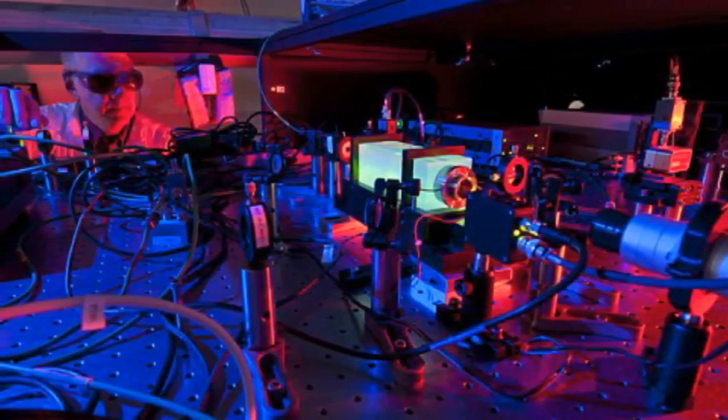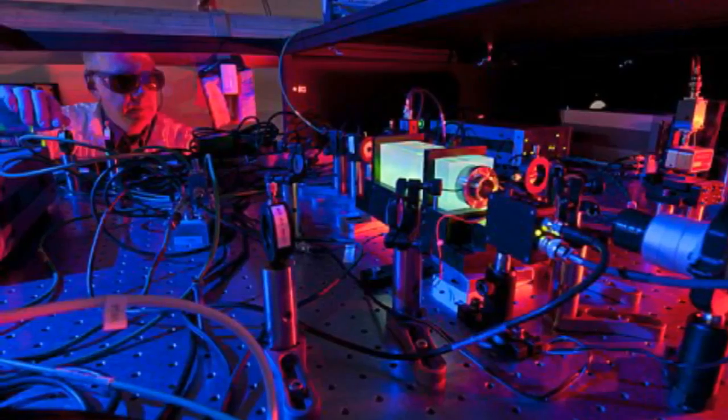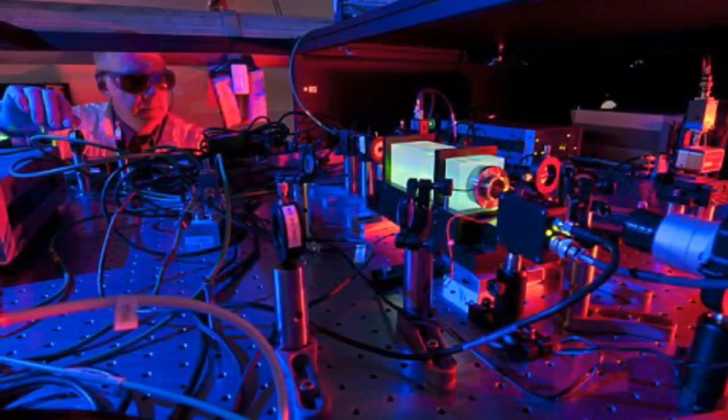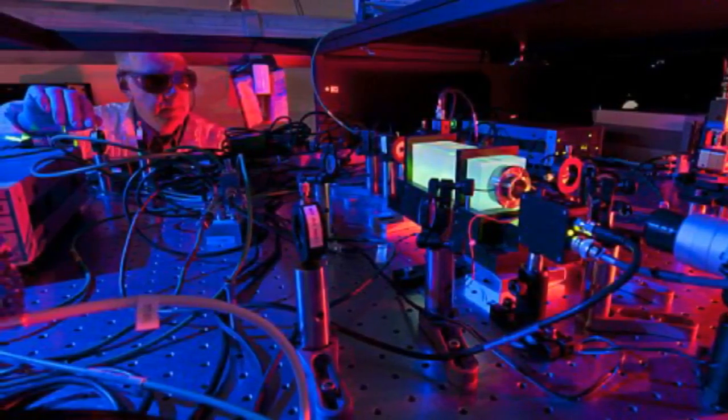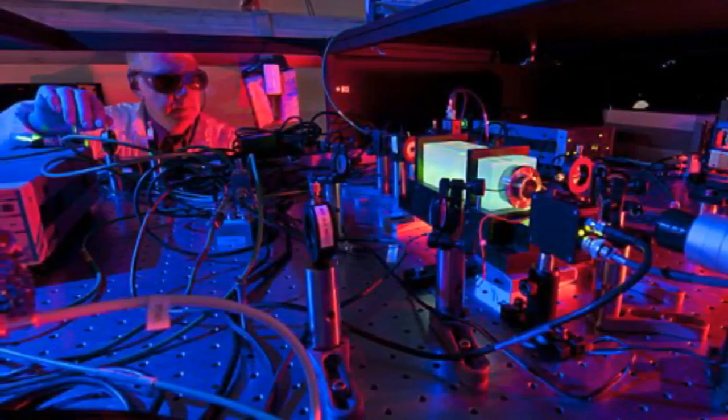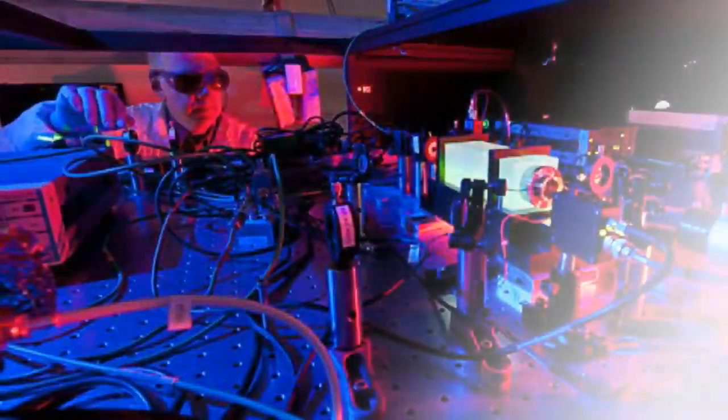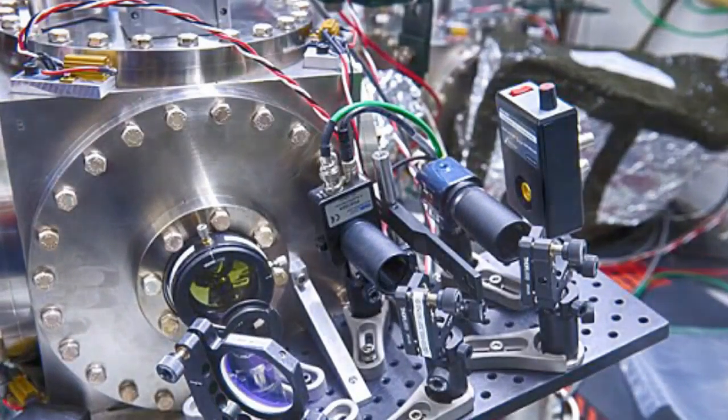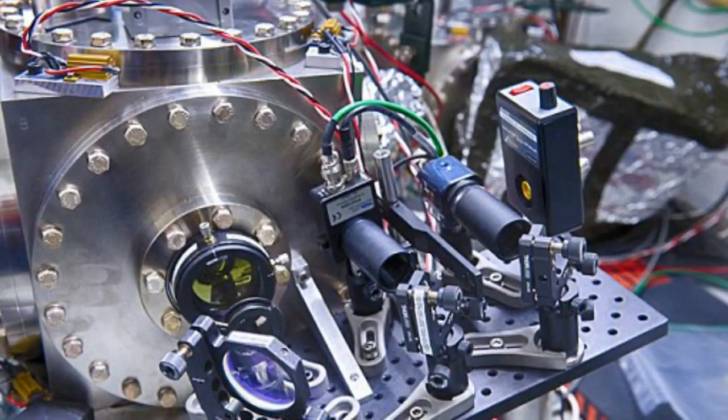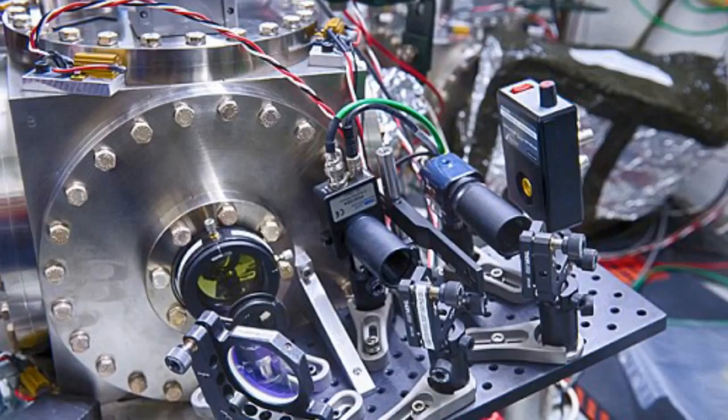The instrument that tested these limits is Fermilab's holometer, or holographic interferometer, the most sensitive device ever created to measure the quantum jitter of space itself. The holometer uses a pair of interferometers placed close to one another. Each one sends a 1 kilowatt laser beam, the equivalent of 200,000 laser pointers, at a beam splitter and down two perpendicular 40-meter arms. The light is then reflected back to the beam splitter where the two beams recombine, creating fluctuations in brightness if there is motion. Researchers study these fluctuations in the returning light to see if the beam splitter is moving in a certain way, being carried along on a jitter of space itself.